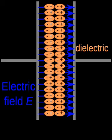Dielectric materials used for capacitors are also chosen such that they are resistant to ionization. This allows the capacitor to operate at higher voltages before the insulating dielectric ionizes and begins to allow undesirable current.